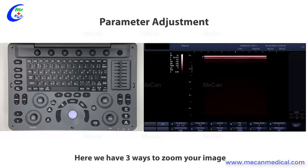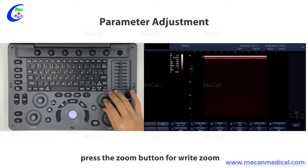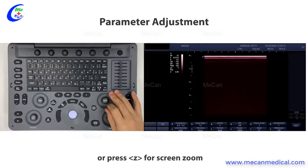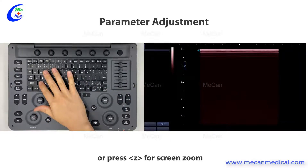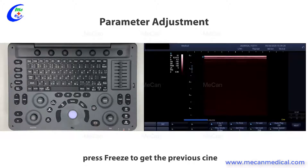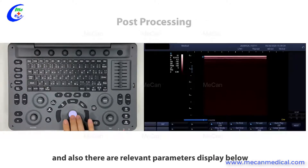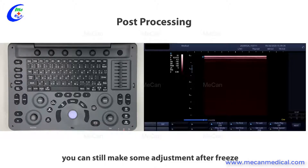There are three ways to zoom your image: switch the zoom button for re-zoom, press the zoom button for right zoom, or press Z for screen zoom. After you get a standard image with good parameters to fit your need, press freeze to capture the cine. Move the trackball to choose your perfect frame; relevant parameters are also displayed below. You can still make some adjustments after freeze.